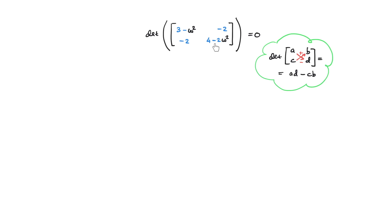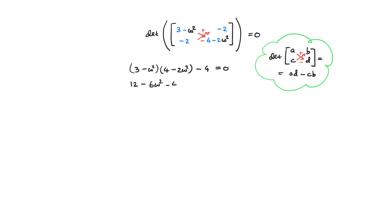Applying this to our matrix, we have (3 minus omega squared) multiplied by (4 minus 2 omega squared), minus (minus 2) multiplied by (minus 2), which gives minus 4, equals zero. Expanding this: 12 minus 6 omega squared minus 4 omega squared plus 2 omega to the power of 4 minus 4 equals zero.